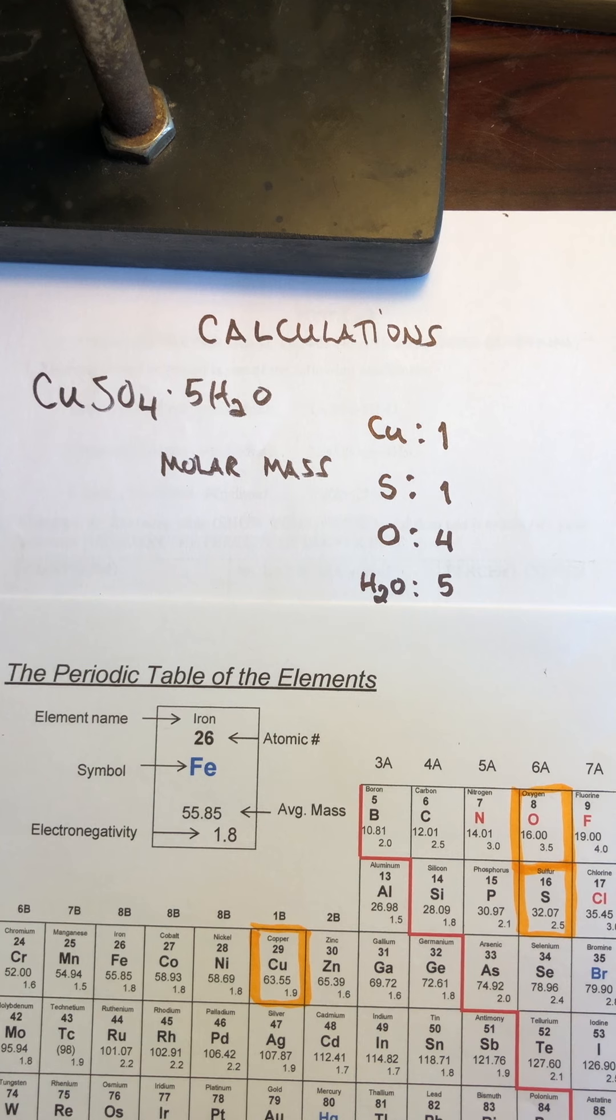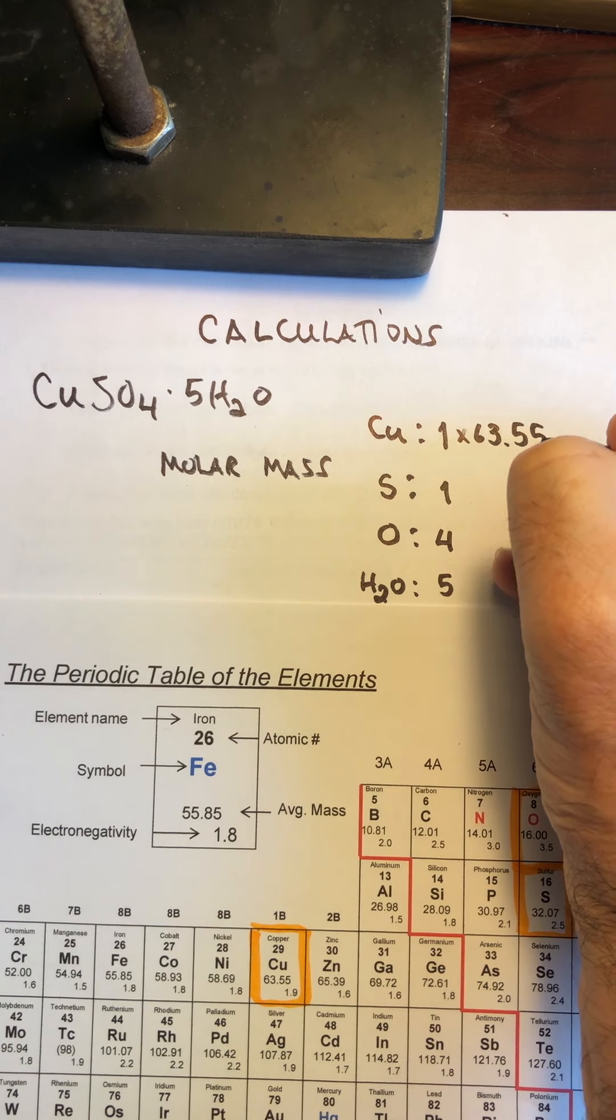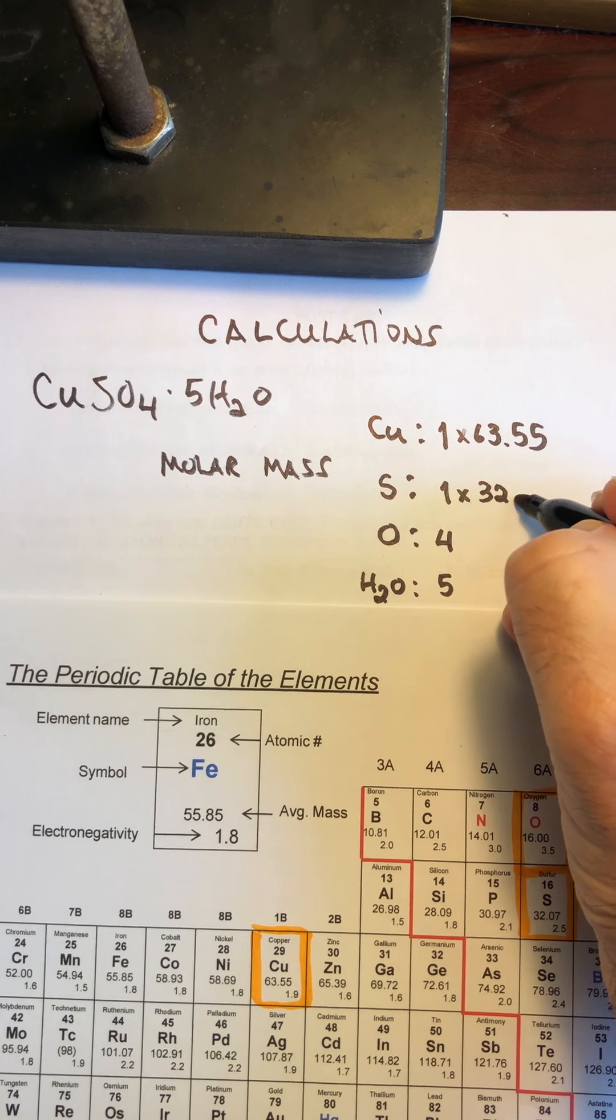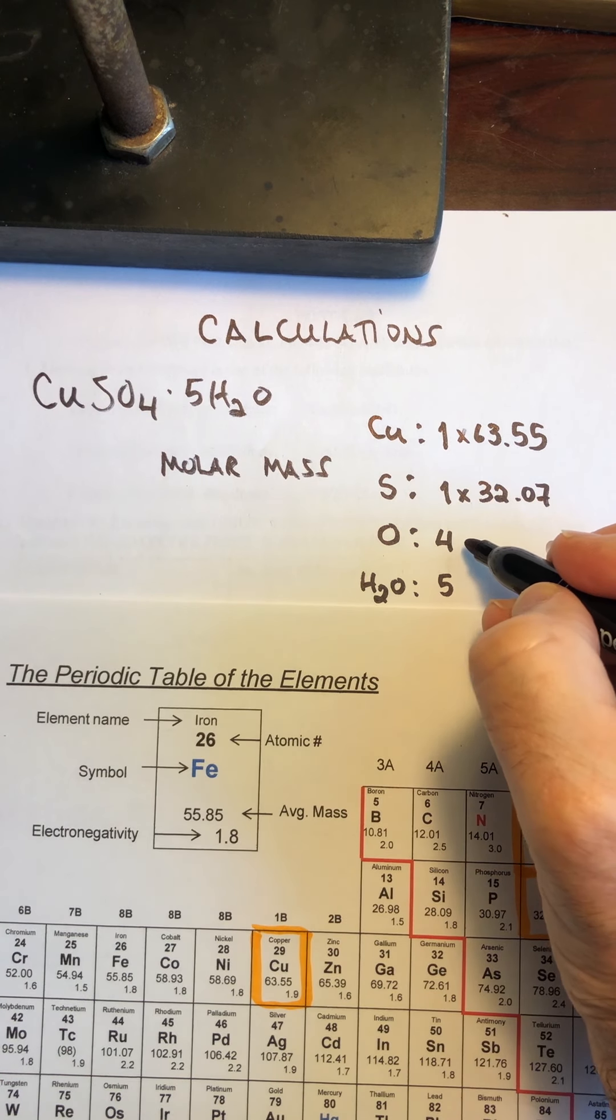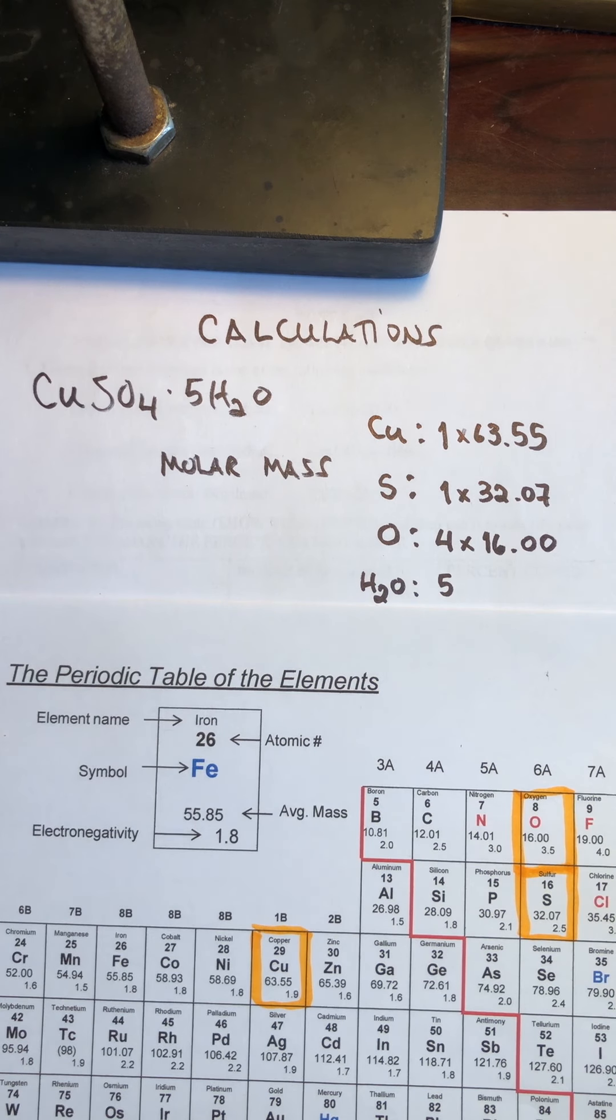Okay, there we go. So copper is 63.55. Sulfur is 32.07.